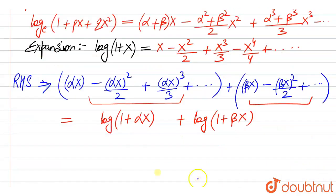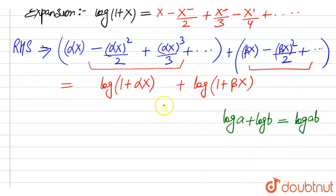So this becomes equal to, now log has a property that when we have log of a plus log of b, this is equal to log of a into b. So here we can multiply.